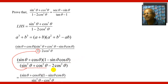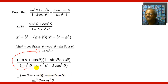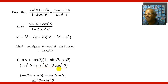So, the numerator is (sinθ + cosθ)(1 − sinθcosθ). In the denominator, sin²θ + cos²θ − 2cos²θ: since cos²θ minus 2cos²θ is like x² minus 2x² = −x², this gives sin²θ minus cos²θ.